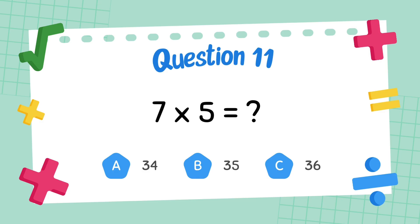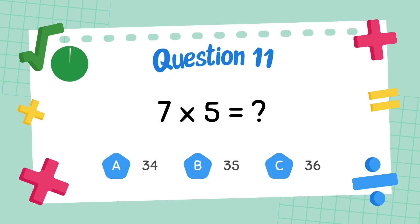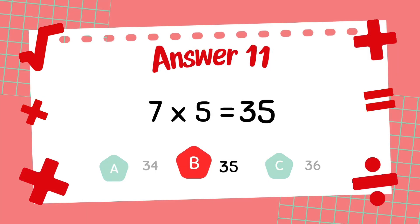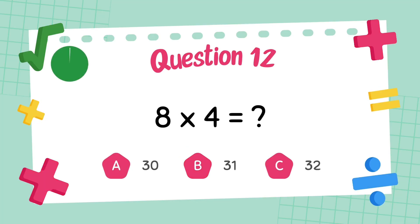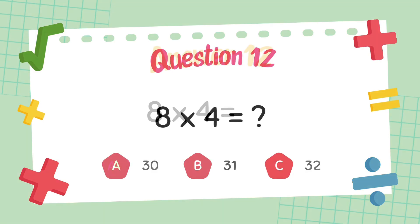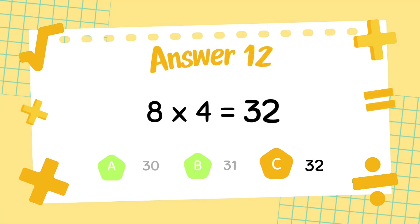What is seven multiply five? The answer is thirty-five. What is eight multiply four? The answer is thirty-two.